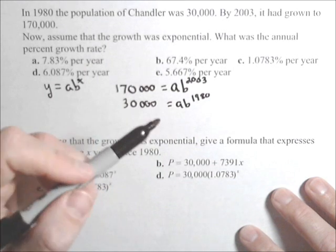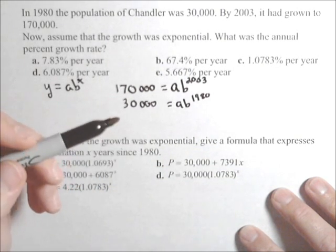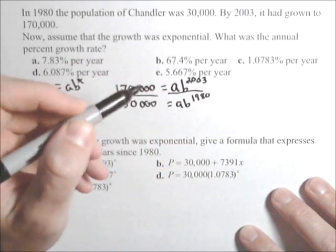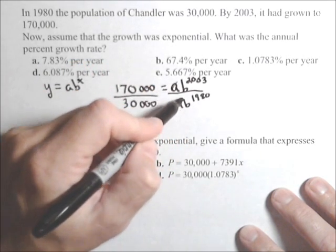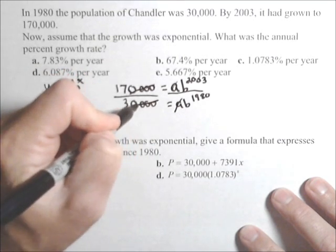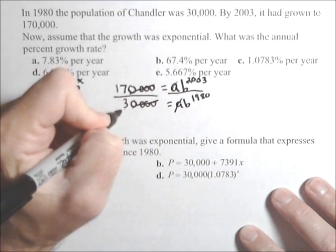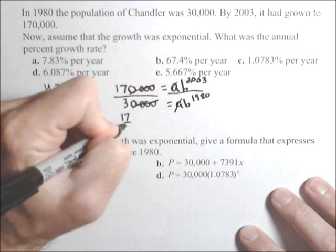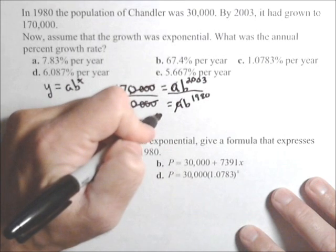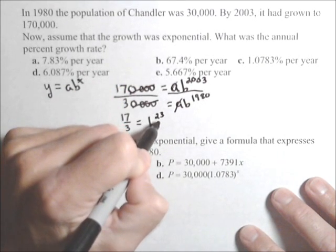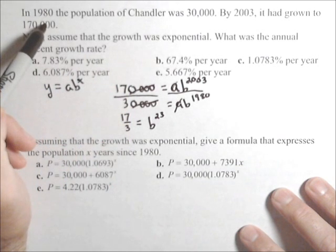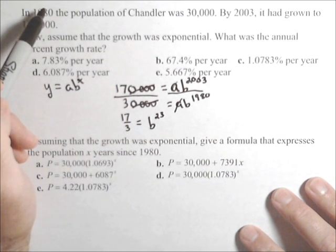The nice thing about this method is you can use it to find any exponential function between two points. We'll use elimination by dividing the two equations, because the a's cancel. That simplifies to 17/3 = b^23. Notice where the 23 came from—it's the number of years between the data points. And 17/3 is the population in 2003 divided by the population in 1980.